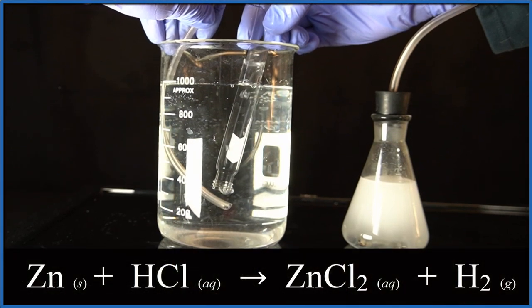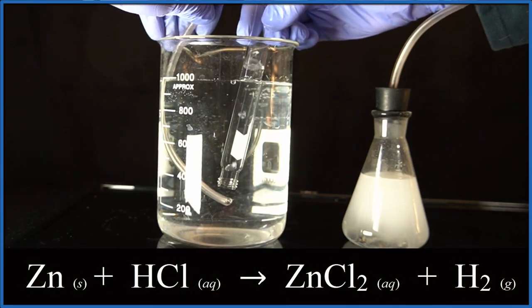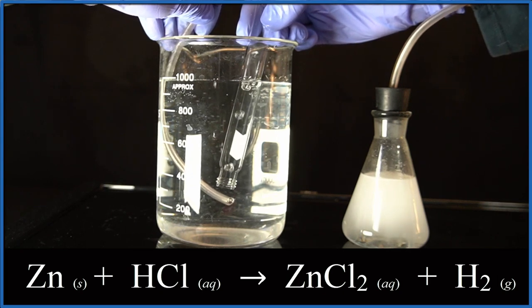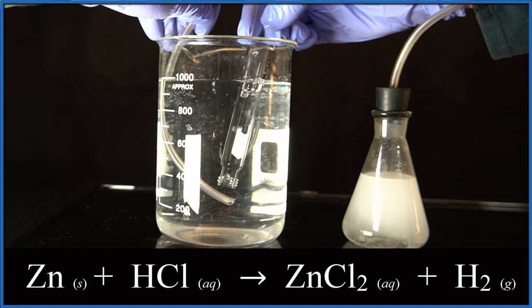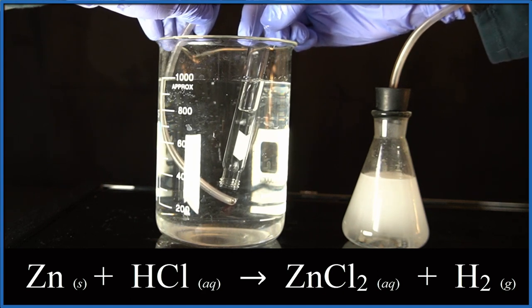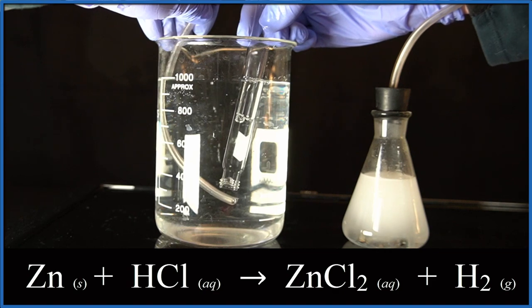So back to our equation, the zinc metal actually replaced the hydrogen in HCl in a single displacement reaction. We end up with zinc chloride, that's still dissolved in the water, and the hydrogen gas bubbles out. And that's the reaction of zinc metal with hydrochloric acid.